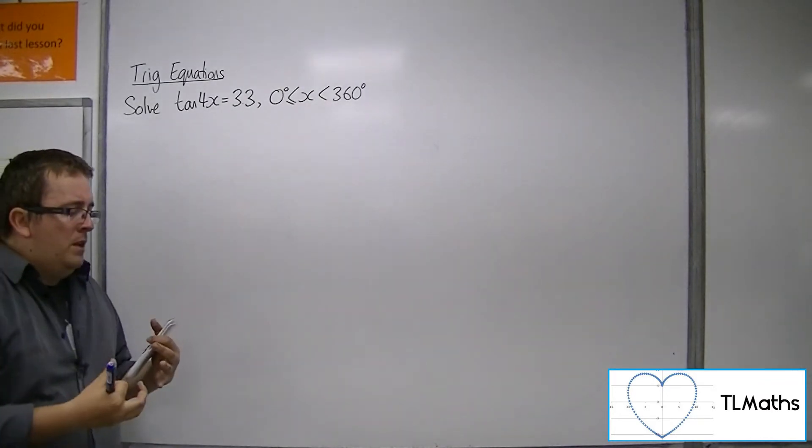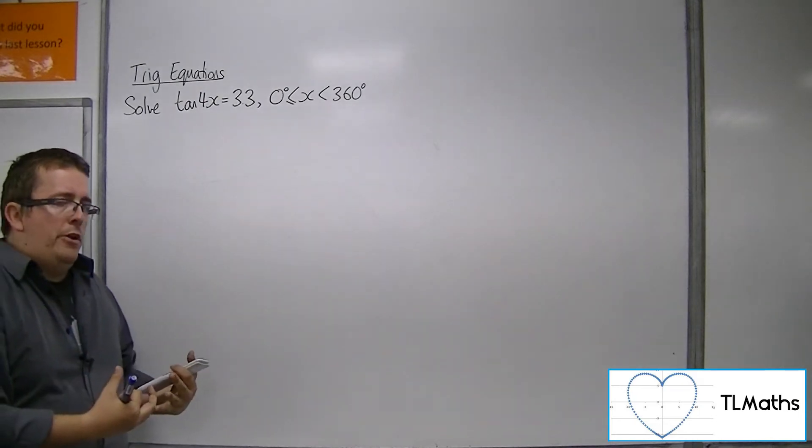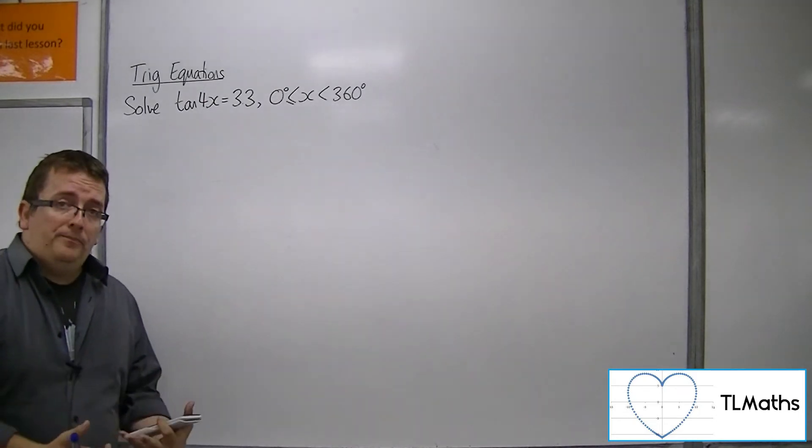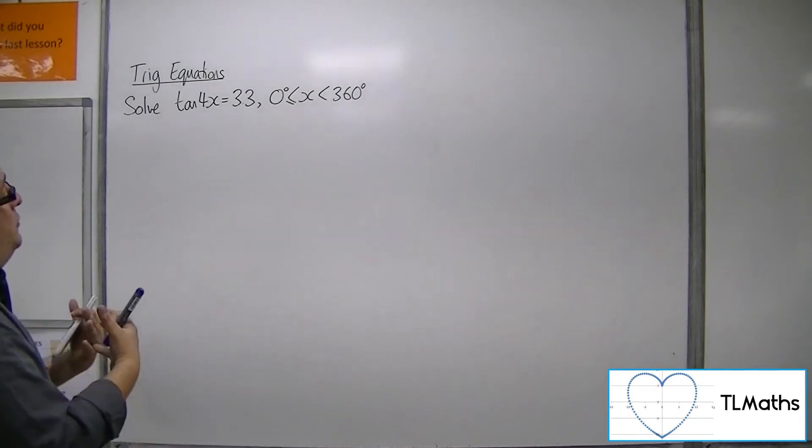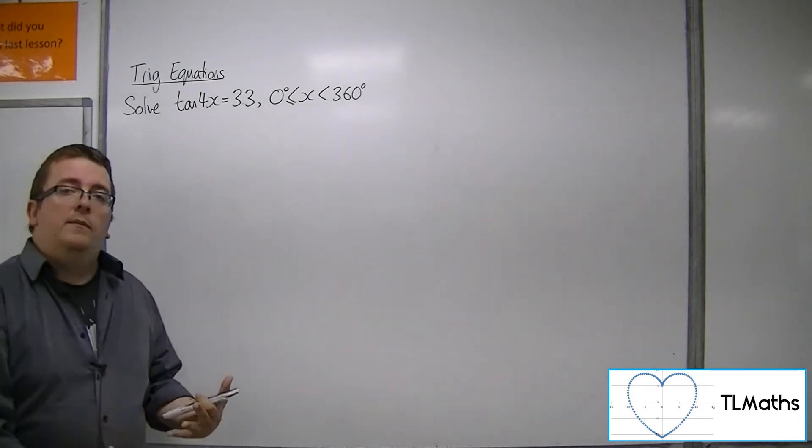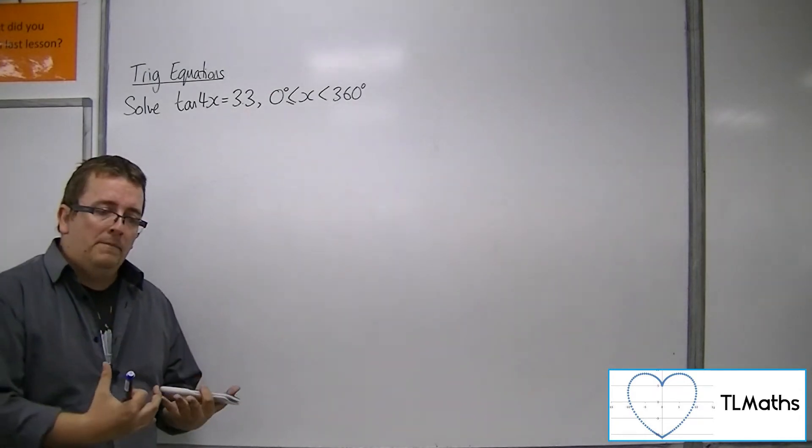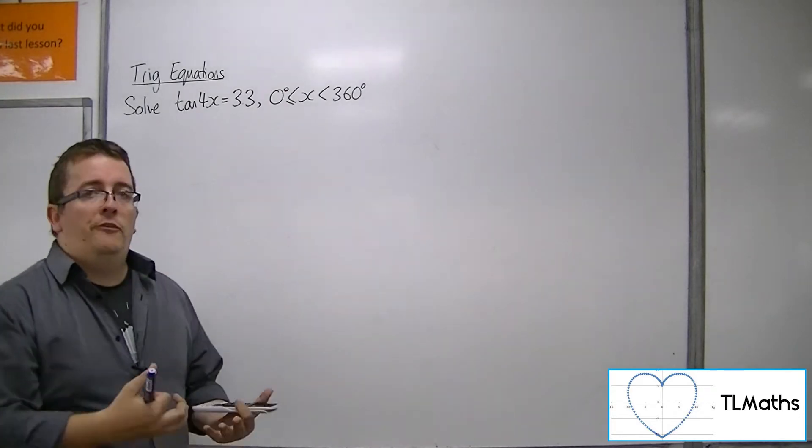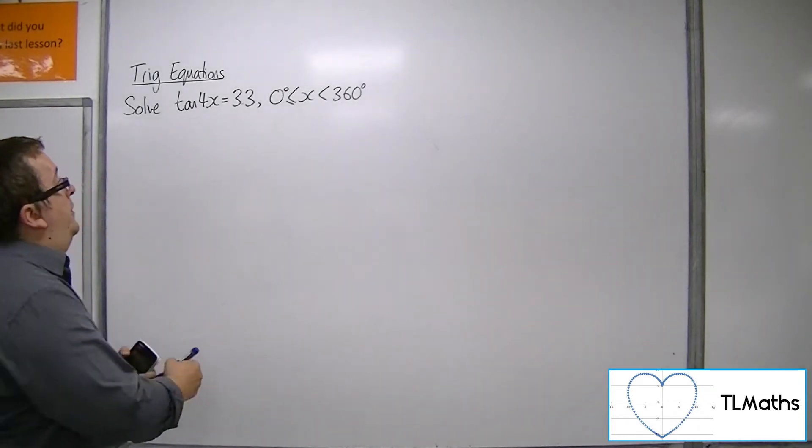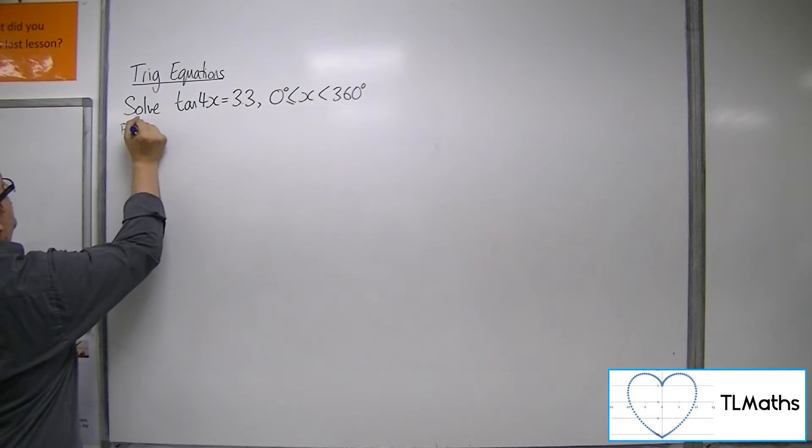Tan would usually have a period of 180 degrees. Because we've stretched it by factor of quarter, the period has stretched as well. So 180 degrees divided by 4 is 45 degrees. We now have a period of 45 degrees.